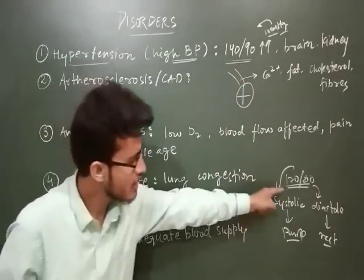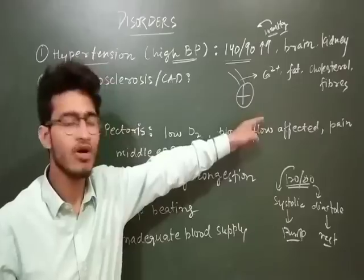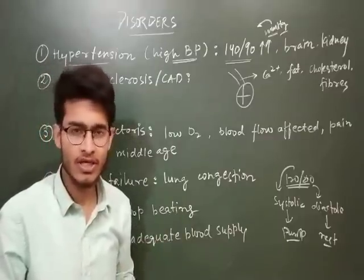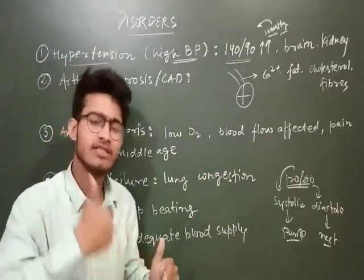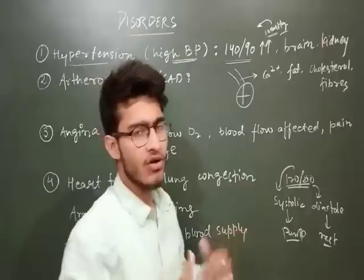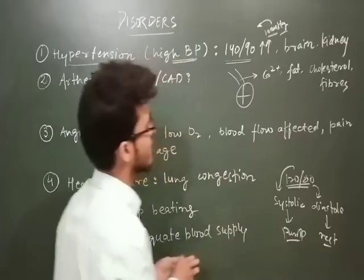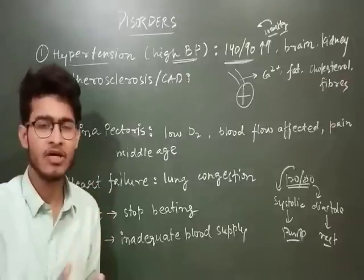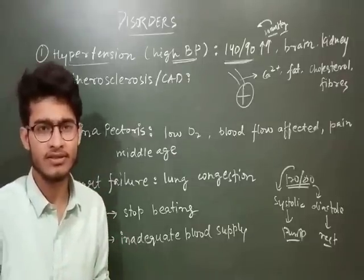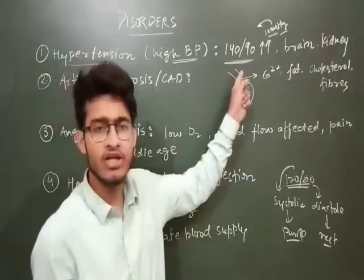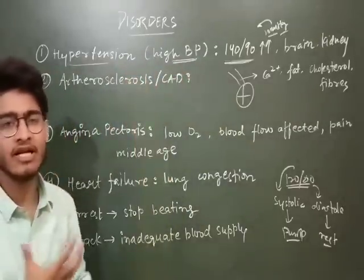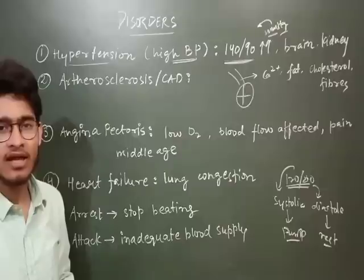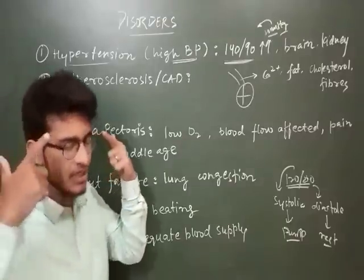When the blood pressure becomes high — when the 120 becomes 140 and the 80 becomes 90 — that is when Hypertension occurs. 140/90 or above falls under the category of Hypertension. Hypertension is quite harmful because it will surely affect your circulatory system, the main pumping organ — the heart — and other than that, your kidneys and important organs such as the brain are also affected.